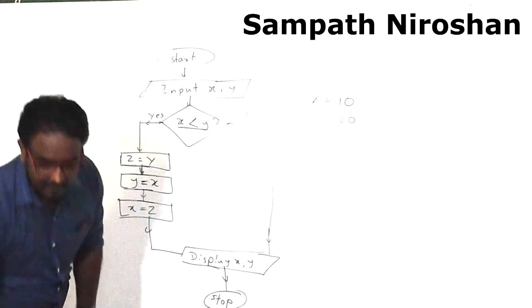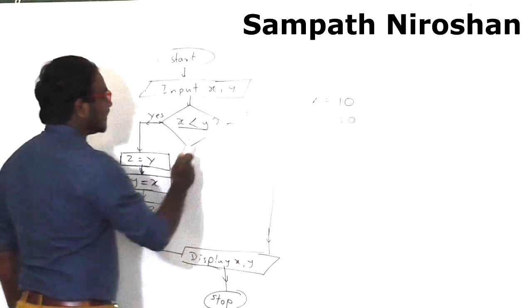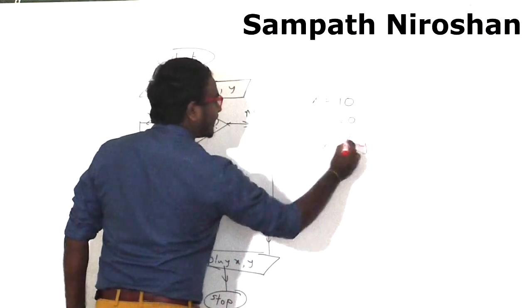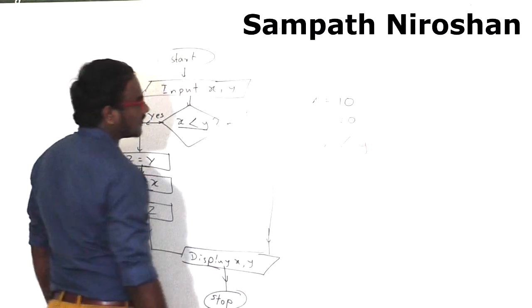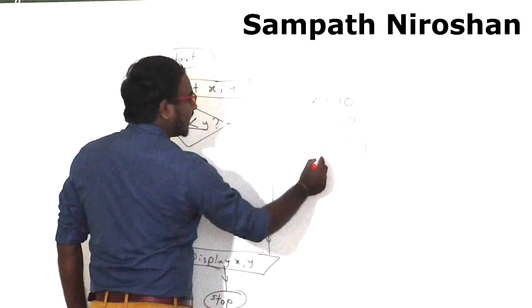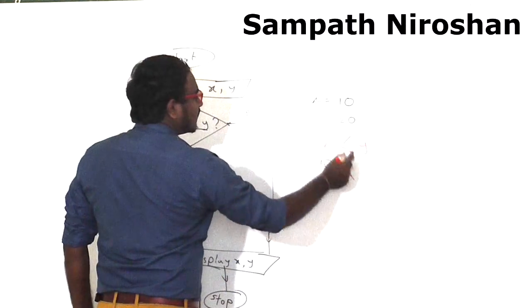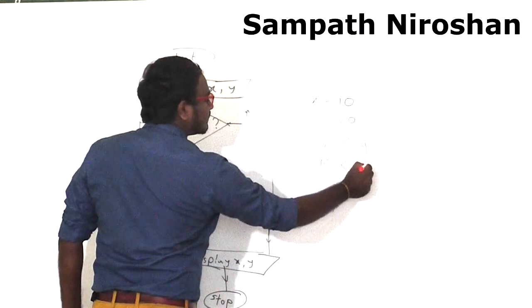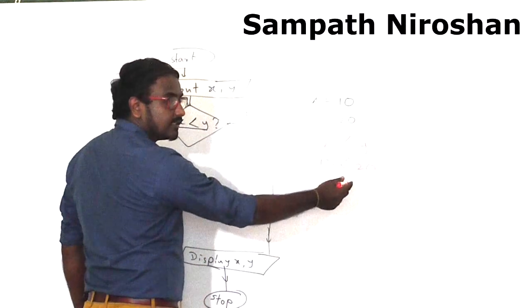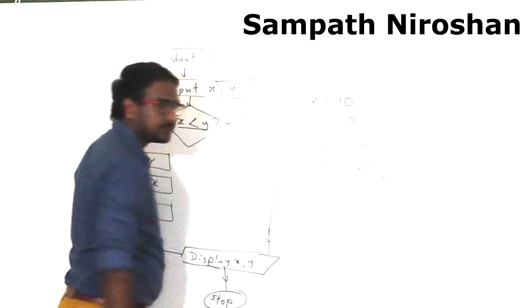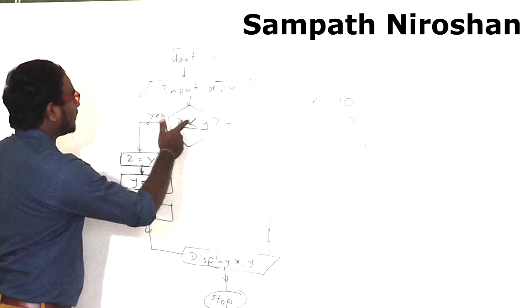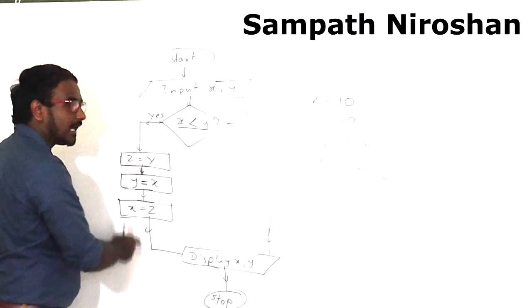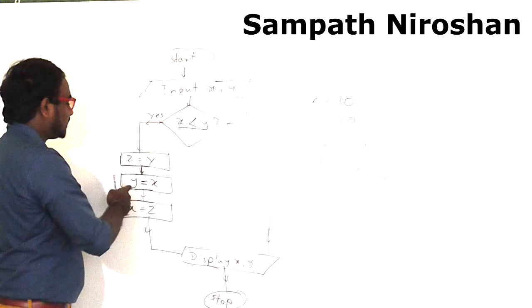My argument here is x less than y. Put the values and check if this is correct or wrong. X is 10, y is 20. Is this correct? Of course it is correct. So when it is correct, this flowchart will move on the yes path.